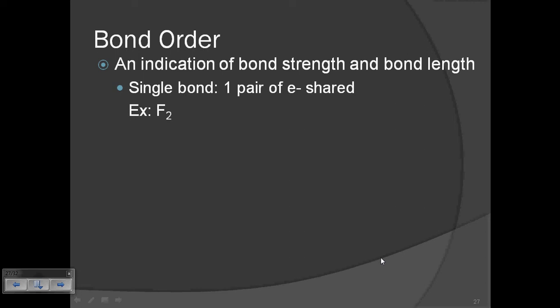Starting with bond order. Bond order is an indication of bond strength and bond length. Simply speaking, bond order for a covalent bond is the number of bonds. If it is a single bond, then the bond order is one. For a double bond, bond order is two. For a triple bond, bond order is three.